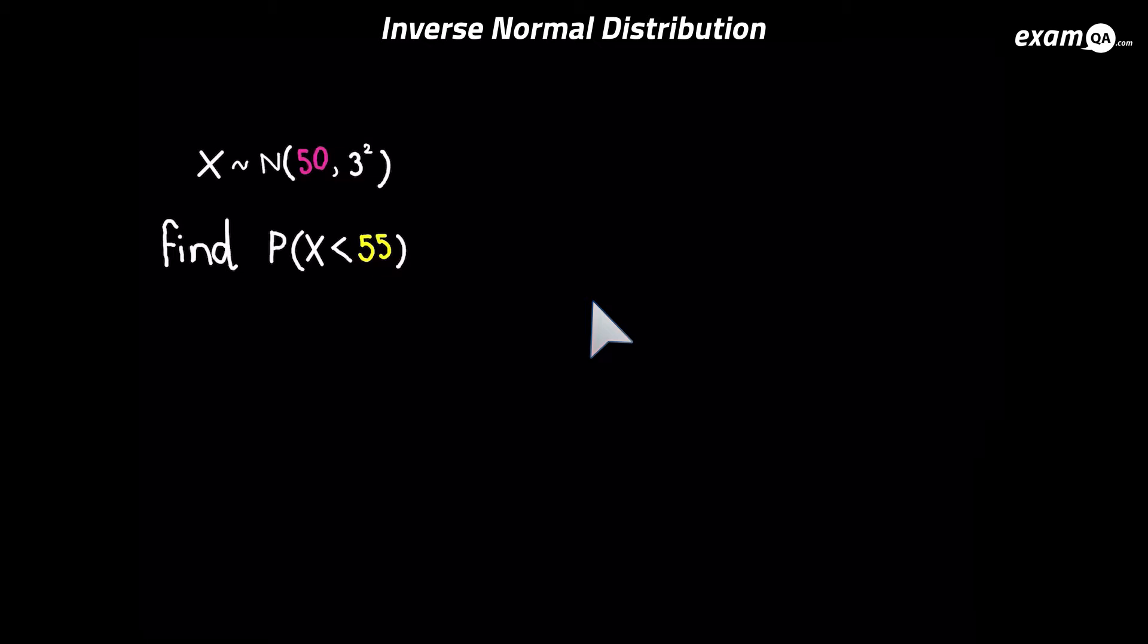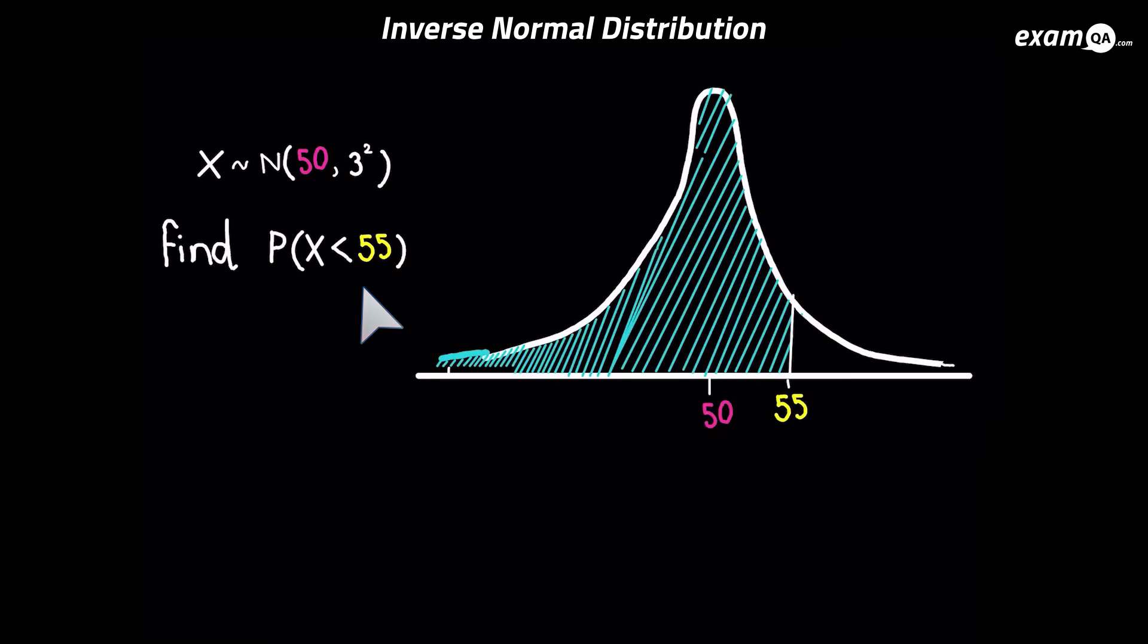So previously we had questions like this, where we knew the mean, the standard deviation, and we wanted to work out the probability that x is less than 55, meaning the area to the left of 55. This area here. And of course you just throw it into your calculator, you put your upper bound as 55, and your lower bound as something to the really left of 55, maybe minus a million.